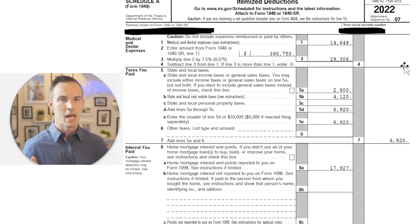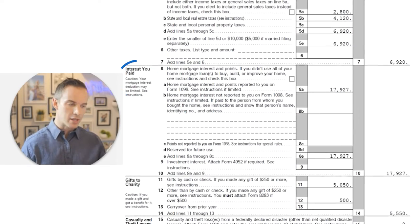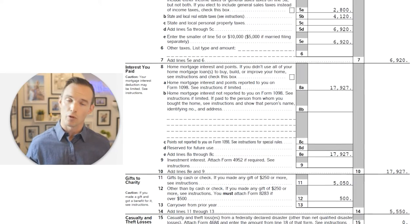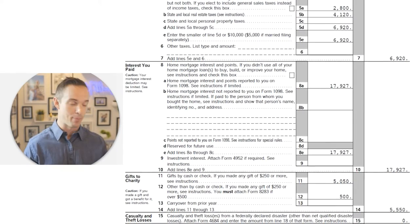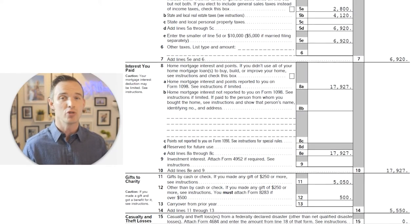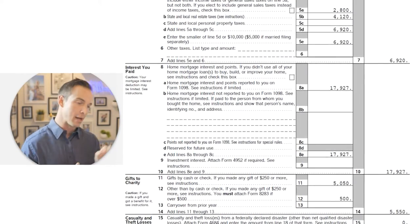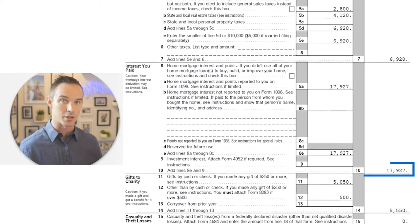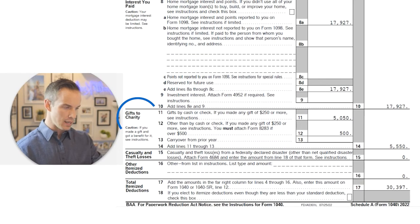The next section is 'interest paid' — probably the easiest one. If you own a home, this is your mortgage interest deduction. Whenever you hear people say they're buying a home for the tax benefits, this is exactly where it shows up on paper. This household paid about $18,000 in mortgage interest in 2022.